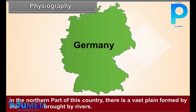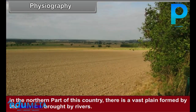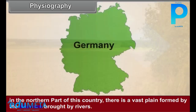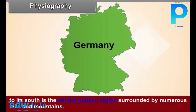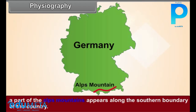Physiography. In the northern part of this country, there is a vast plain formed by the alluvium brought by rivers. To its south is the central plateau region surrounded by numerous hills and mountains. A part of the Alps Mountains appears along the southern boundary of the country.